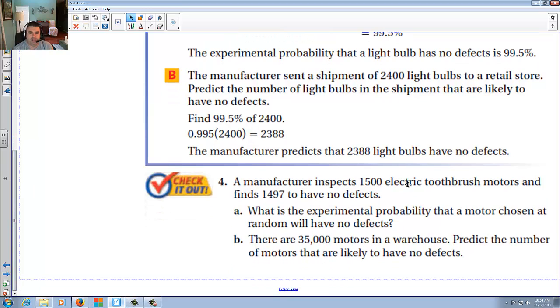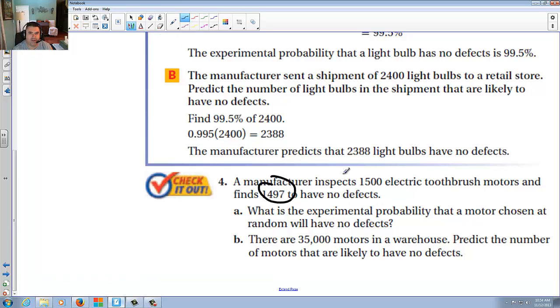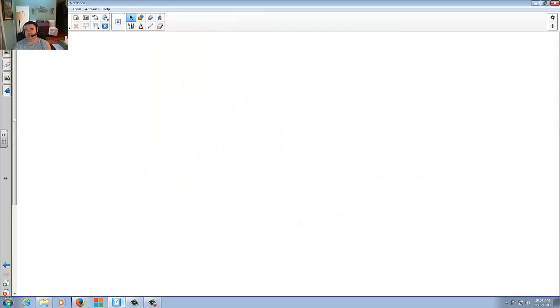A manufacturer inspects 1,500 electric toothbrush motors and finds that 1,497 have no defects. You would simply take this divided by this times 100 to find out what you have. And that's it. There's much more to do on this. We'll probably do a little Vegas experiment in class tomorrow. That's fine. But until then, we'll talk to you later. Bye.